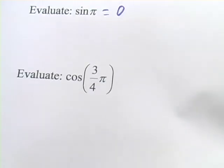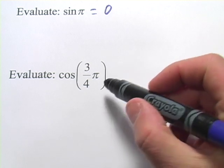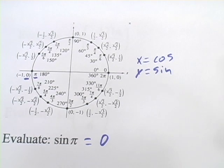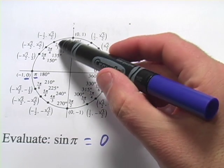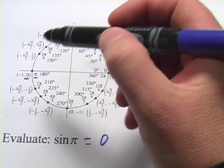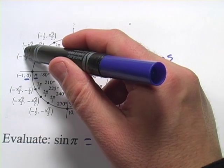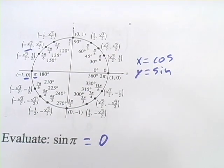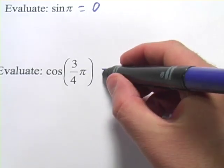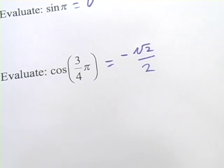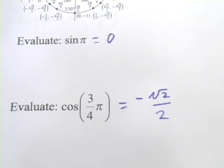Let's try another one. This one says evaluate the cosine of 3 fourths pi. So again, we're going to look back at our unit circle here and find 3 fourths pi. And right there, 135 degrees is 3 fourths pi. And since we want to find the cosine, we're looking at the x value there. And that's negative square root of 2 over 2. So this is just negative square root of 2 over 2. That's the exact value of the cosine of 3 fourths pi.